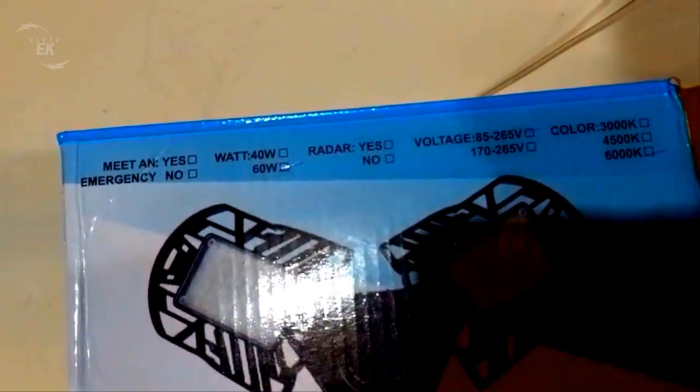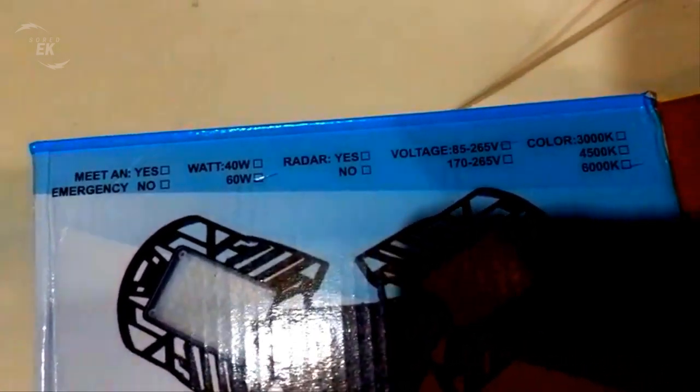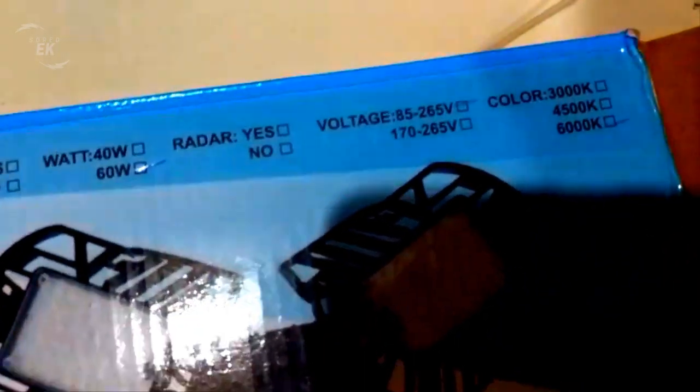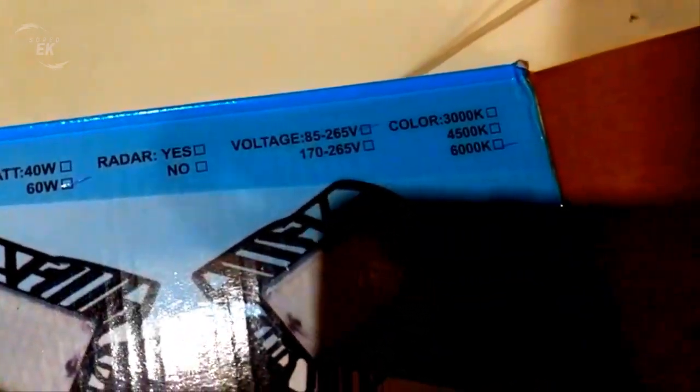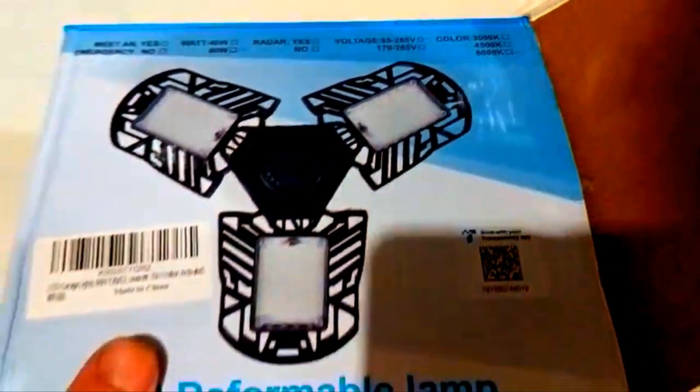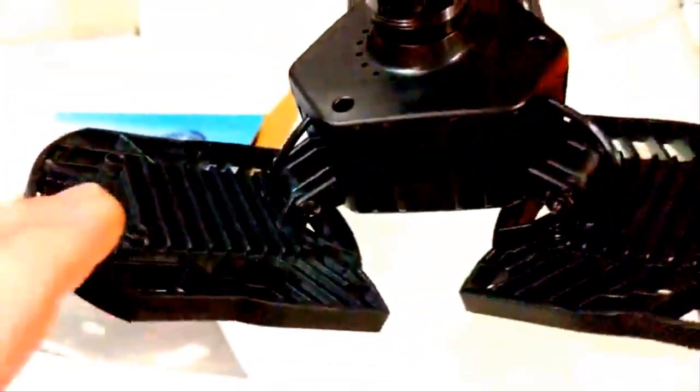Okay, I've just unboxed one of these LED work lights. It looks like it's rated 60 watts, 85 to 265 volts, and 6000K. I've got it hanging here just plugged into a basic socket so I can test it out.